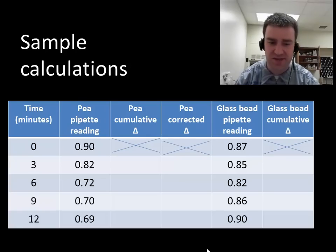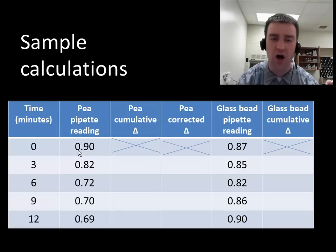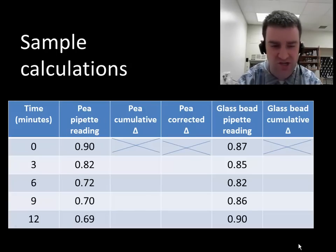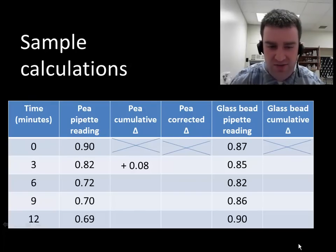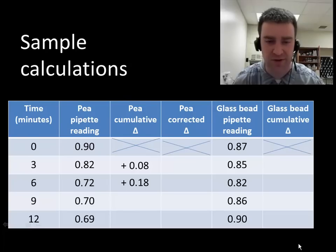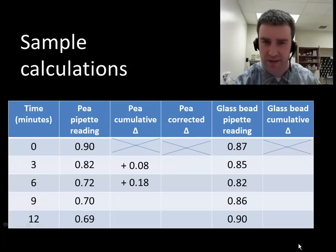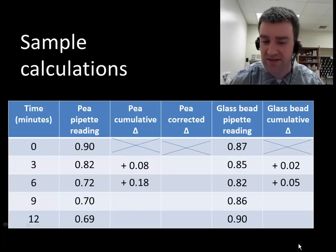So let's just finish this up by showing you some sample data. Some things that we'll want you to do here is we'll want you to always calculate a cumulative change. In other words, whatever reading you take at time zero, once your temperature equilibrations have finished, always subtract that initial reading from any subsequent readings. So how much gas volume changed over the first three minutes, we could subtract 0.9 from 0.82. We're going to call that direction the positive direction, so always do initial minus whatever time you're testing. So after six minutes, the peas would change from 0.9 to 0.72. That would be a positive 0.18 milliliters of volume change. We could do the same thing for our glass beads. Always subtract from time zero. So after three minutes, our glass beads changed two hundredths of a milliliter in the positive direction. And after six minutes, they changed 0.05, or five hundredths of a milliliter in the positive direction.